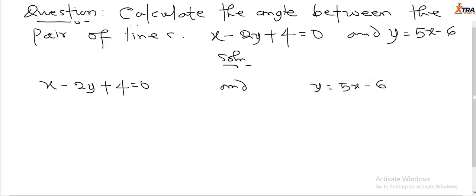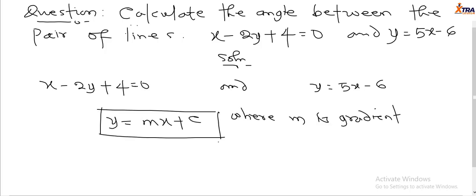To find the angle between the two lines, we use tan theta equals m2 minus m1 over 1 plus m2 m1. So we have to find the gradient of each equation. The general equation for a straight line is y equals mx plus c, where m is the gradient and c is the intercept on the y-axis.